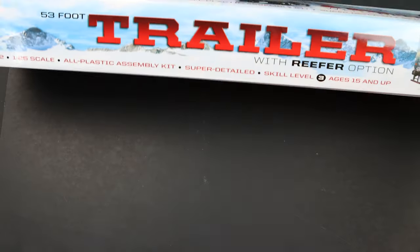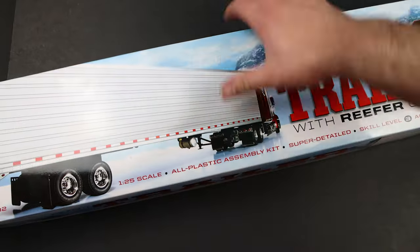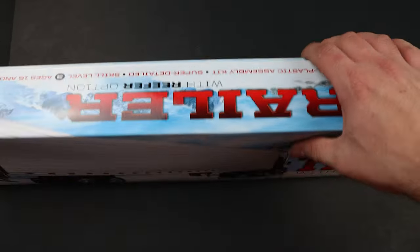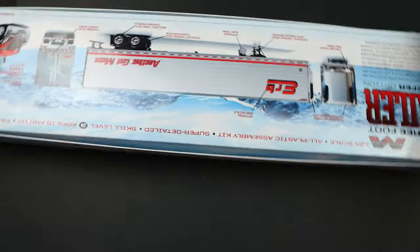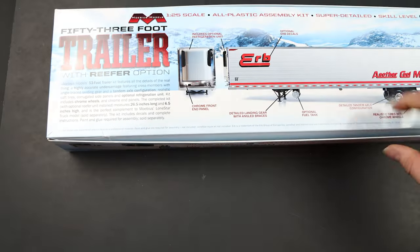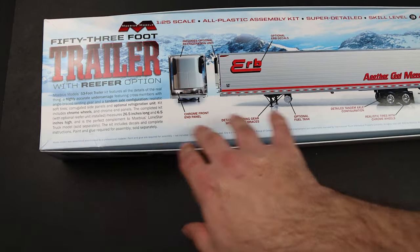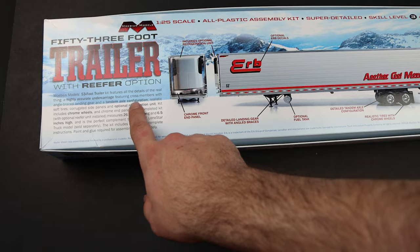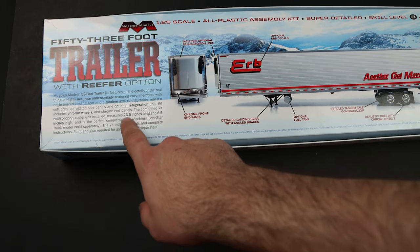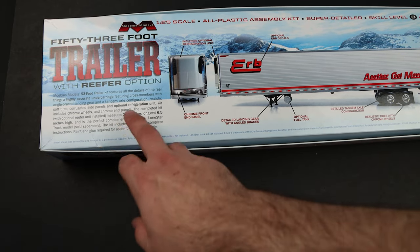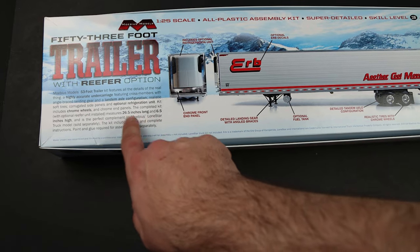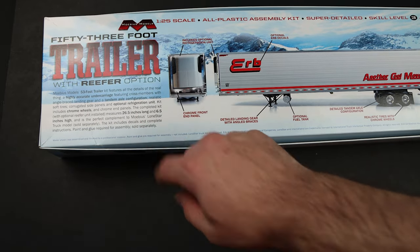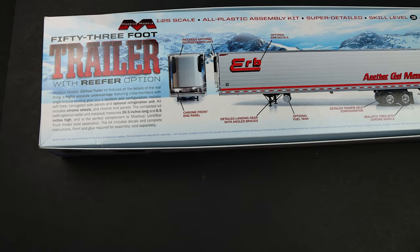Flip to the side. There's not much. On the back, they tell you a little bit about the model and the fact that it has tandem axle, the optional refrigeration kit, chrome wheels. Completed kit measures 26.5 inches long, 6.5 inches high. So it is a big old model when it's done.